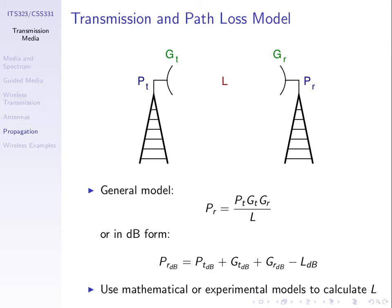Starting with a transmit power PT, the antennas introduce gain — effectively amplifying the signal — so we multiply by GT and GR. The loss reduces the signal strength, so we divide by the loss factor L. This gives us a relationship between those factors, which is useful for answering practical questions in wireless transmission, like how far can we transmit under certain conditions.